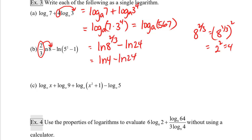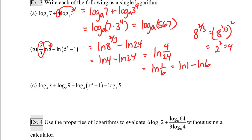I can combine this into a quotient: the natural log of four over 24. Four over 24 simplifies to one-sixth. I can write this as the natural log of one minus the natural log of six. We know that the natural log of one is zero, so this ultimately simplifies down to the negative natural log of six.